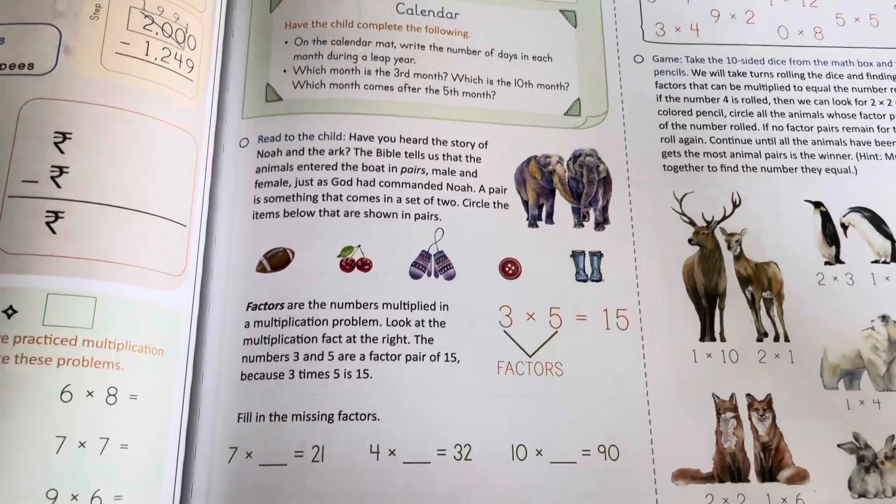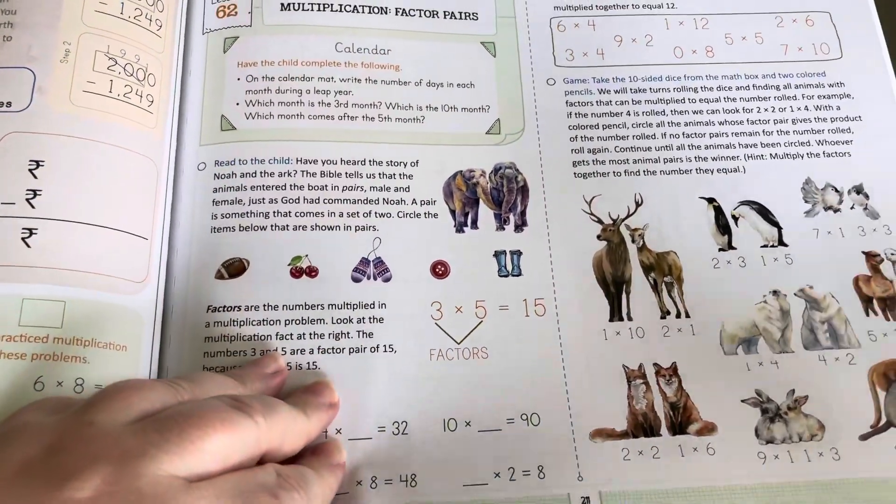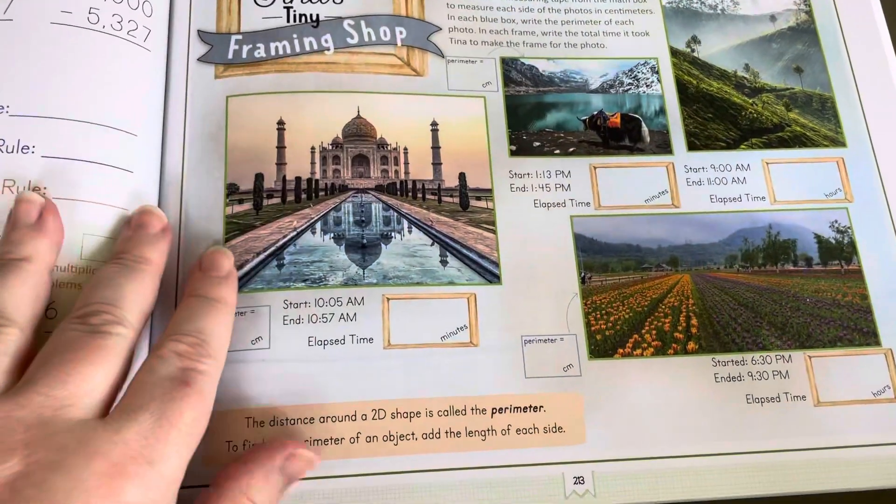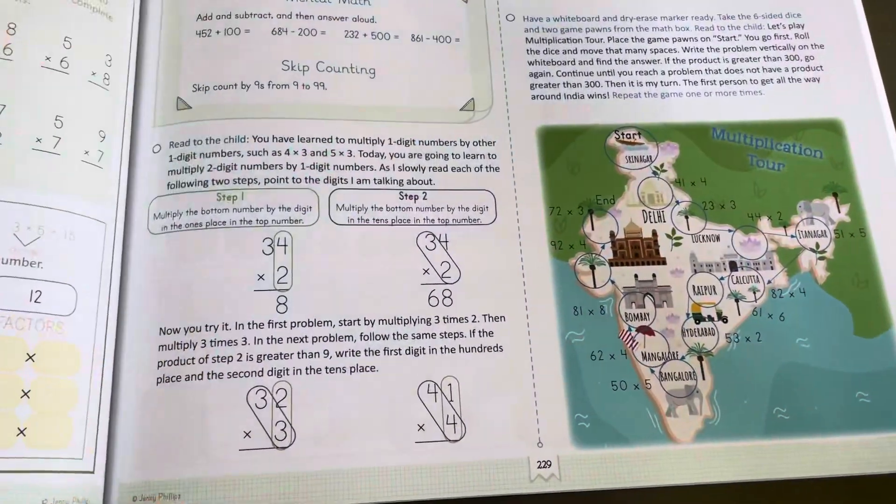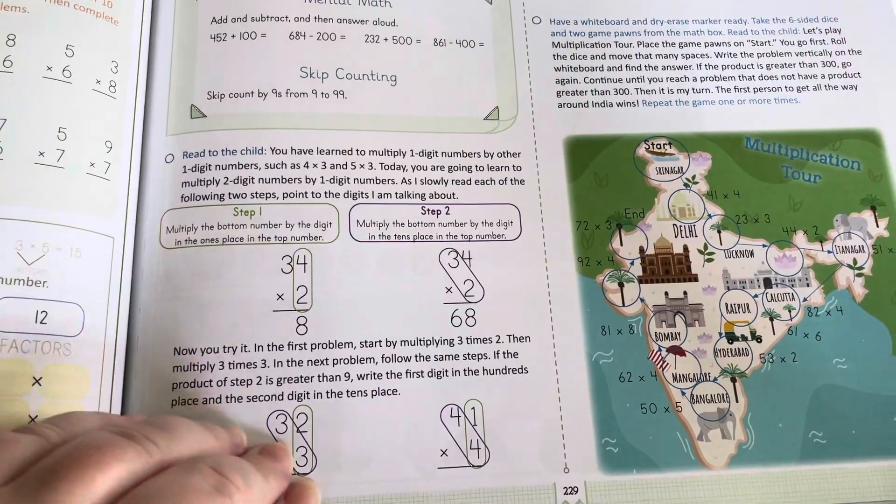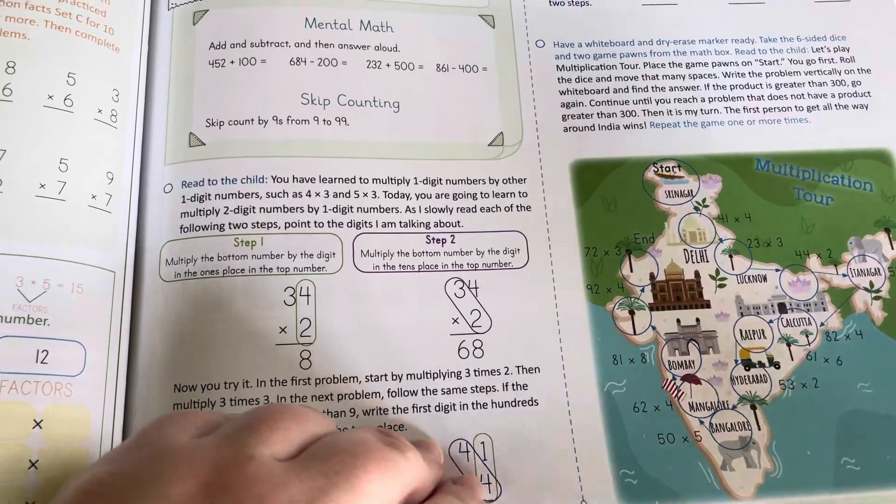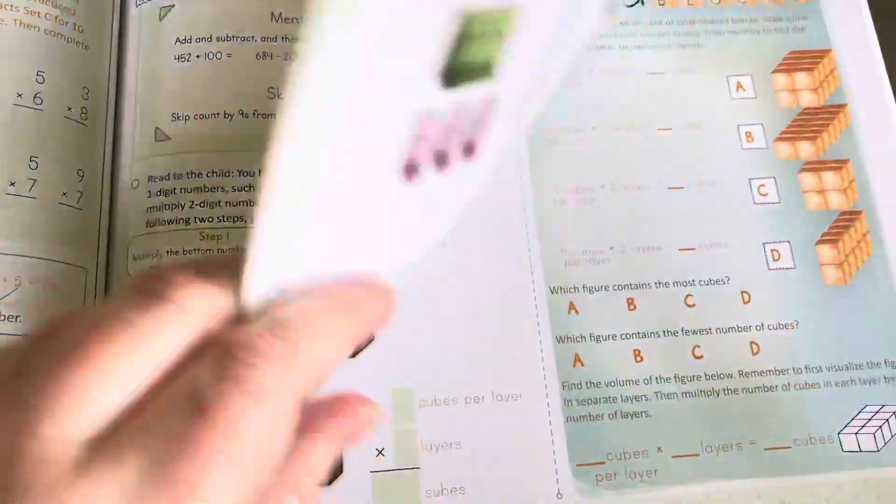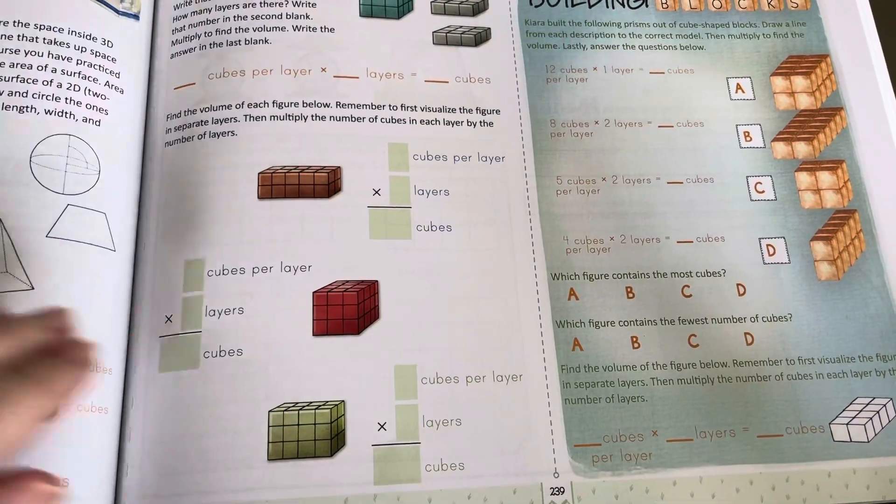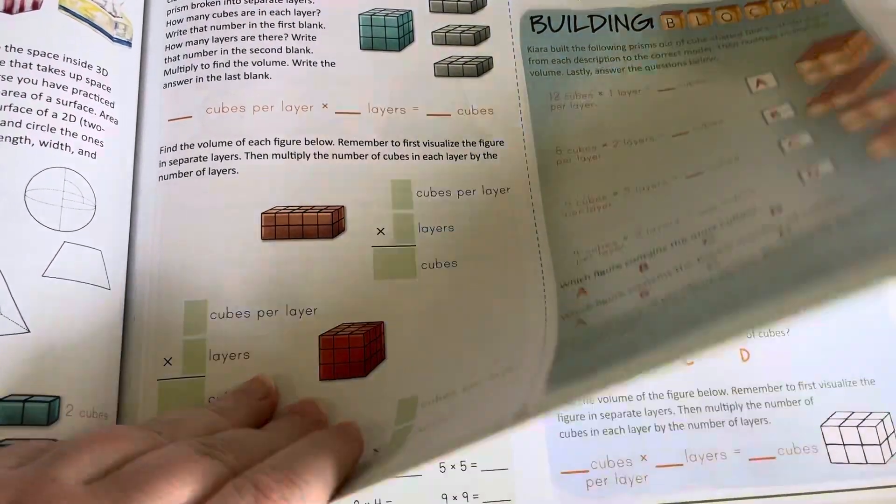They're teaching you all kinds of other stuff. So they expect you to be doing those multiplication facts on your own. There's a unit review. Here we go with factors. One digit by two digit. This is the second half of level three. Volume.